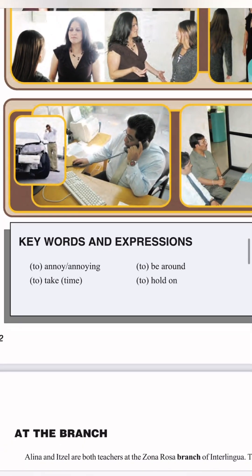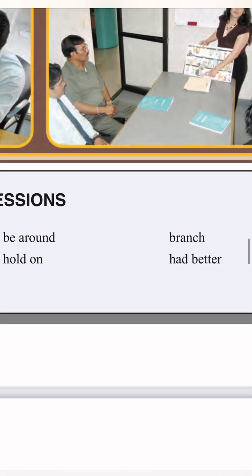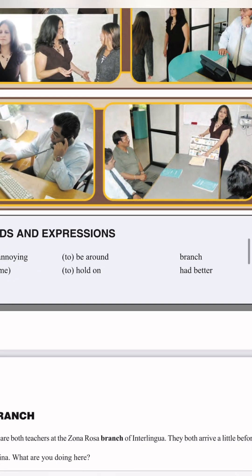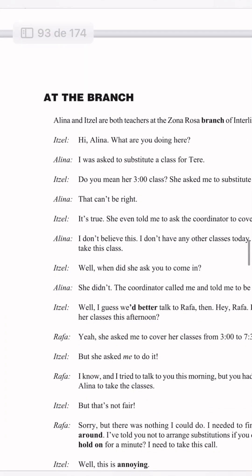We have here the keywords and expressions: to annoy or annoying, to take time, to be around, to hold on, branch, and have bearer. And we have here the dialogue at the branch.